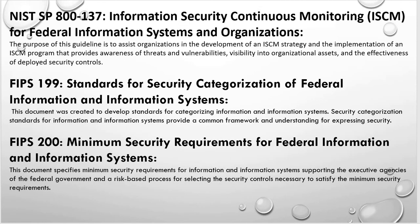NIST SP 800-137 is Information Security Continuous Monitoring for Federal Information Systems and Organizations. Continuous monitoring is one of the very important steps of the Risk Management Framework. This publication guides you on how to put together a good continuous monitoring strategy for your security controls and information system.